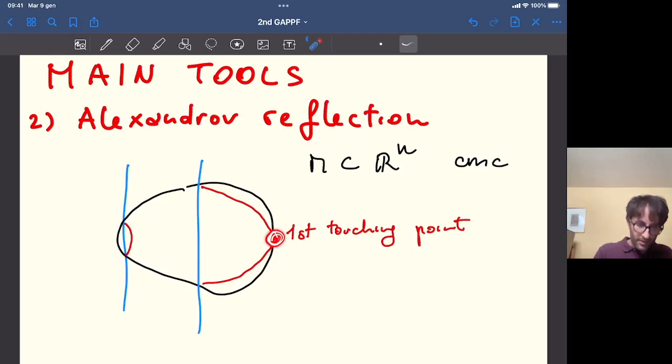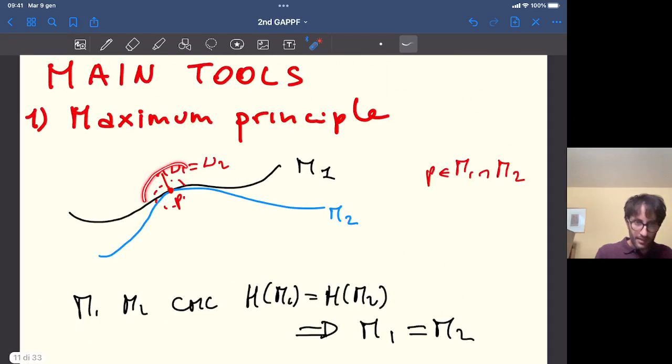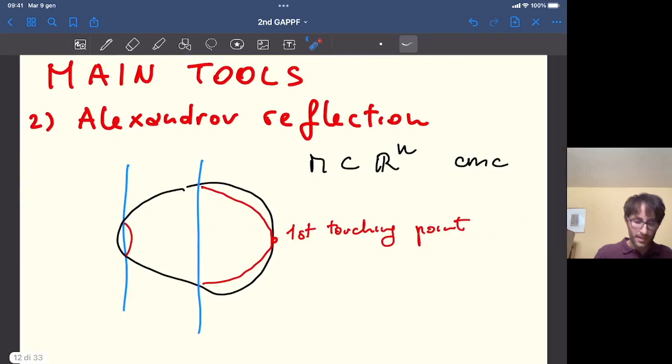And so, around this point we are exactly in this situation. So, as an application of the maximum principle, we have that if we call pi the hyperplane in this specific position, then M is symmetric with respect to pi.